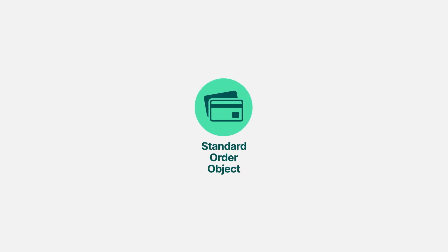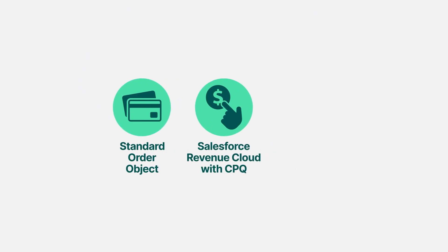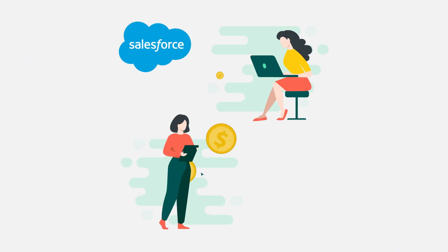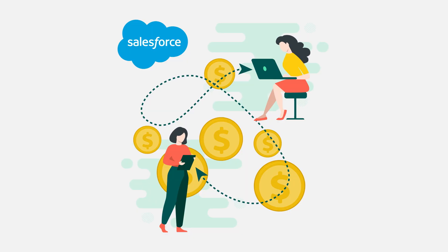The three primary options for managing orders in Salesforce are: the standard order object, Salesforce Revenue Cloud with CPQ (configure, price, and quote), and Salesforce Commerce Cloud. Included with Salesforce Sales Cloud, the standard order object allows you to manage, document, and report on customers who buy new items or add new services to their contracts.